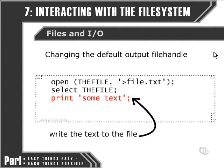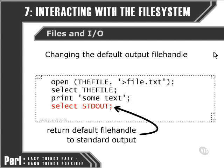This may seem slightly alarming — once we've selected a file as our default output, how do we then return the output to printing something to the user? The print function suddenly looks rather ambiguous. Luckily, there's a way of easily returning the focus of the print function to outputting to the user rather than to a file: we do that by selecting STDOUT — standard output.